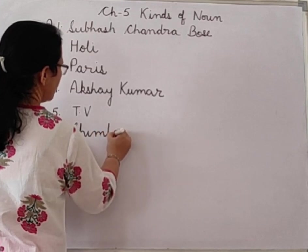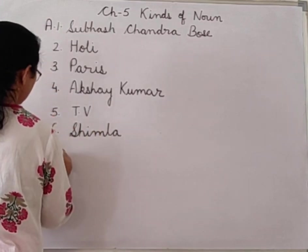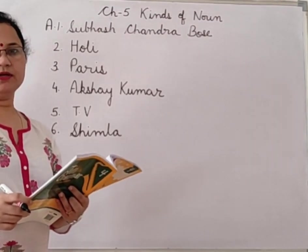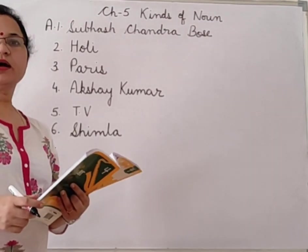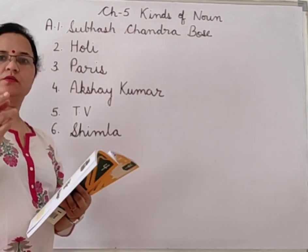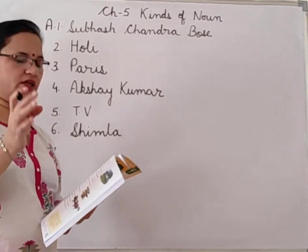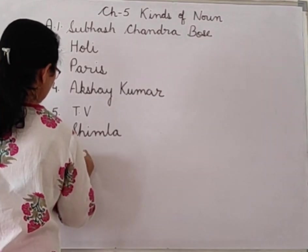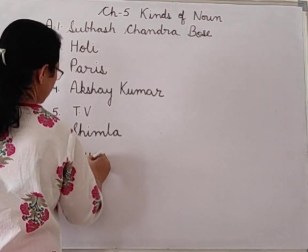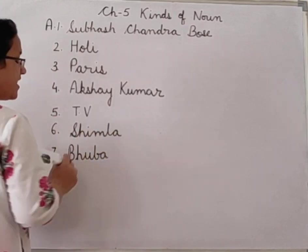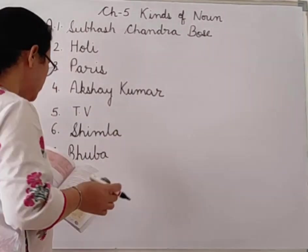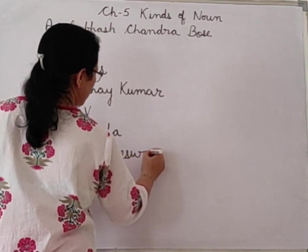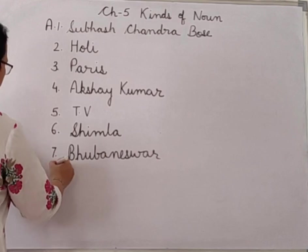Seventh: 'Dash is famous for its temples.' So many cities in India are famous for temples, but the answer is Bhubaneshwar — which is the city of temples, famous for city of temples in India. So Bhubaneshwar. Next: 'Dash is the sacred book of Christians.' Christians worship Lord Jesus, and Bible is their sacred book. So: Bible.